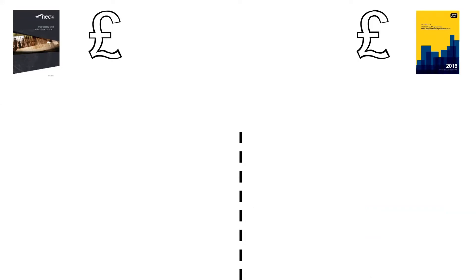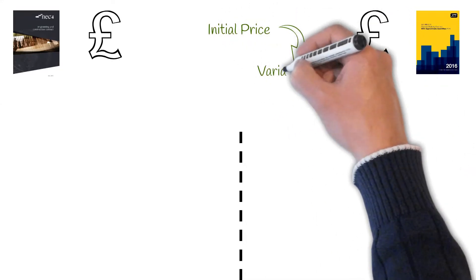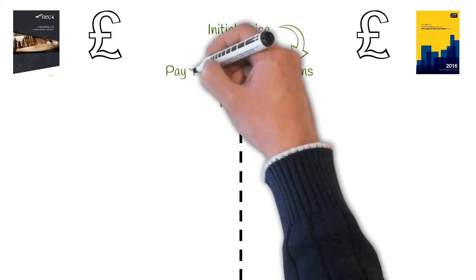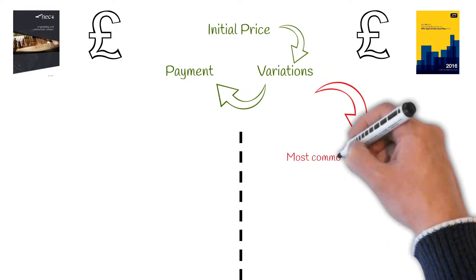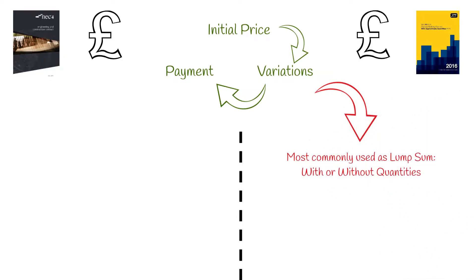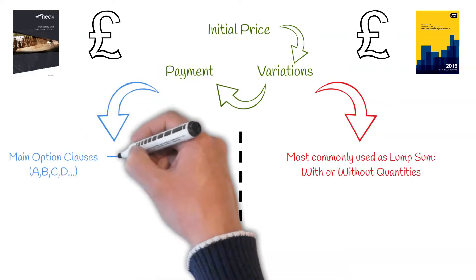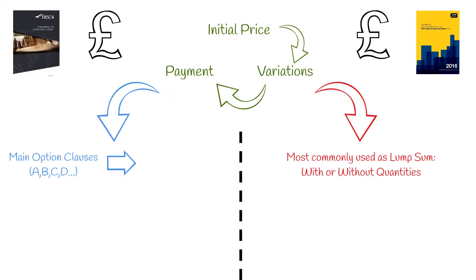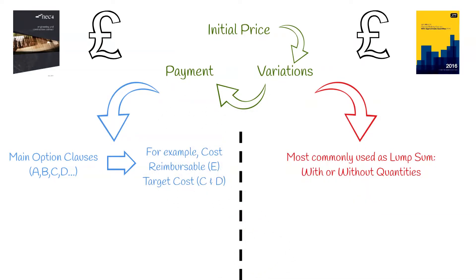Cost. The cost to the employer goes in three stages: initial price, variations and final or interim payment. Both contracts address these stages differently. JCT is most commonly used as a lump sum contract with or without quantities. NEC goes further with pricing methods by providing options for how work is procured, including cost-based open book contracts such as cost-reimbursable or target cost contracts, where the profit and loss is shared between the employer and the contractor.